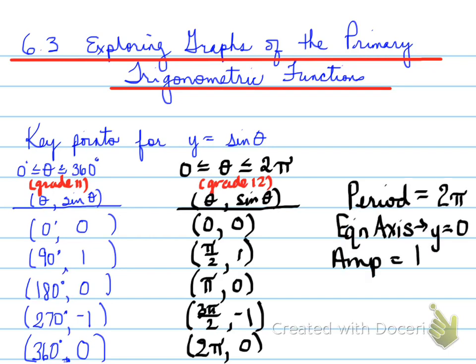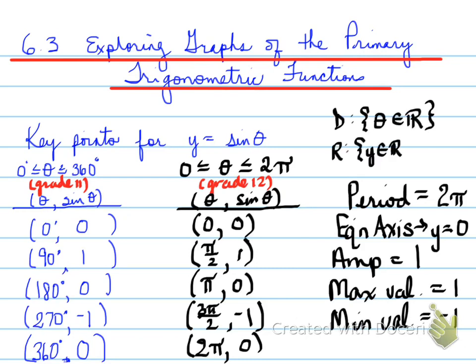The period of the sine function is 2π. The equation of the axis is y = 0. The amplitude is 1, and the max value is 1, and the min value is -1. The domain is theta belongs to real, and the range is y belongs to real, such that y goes from -1 all the way up to 1.